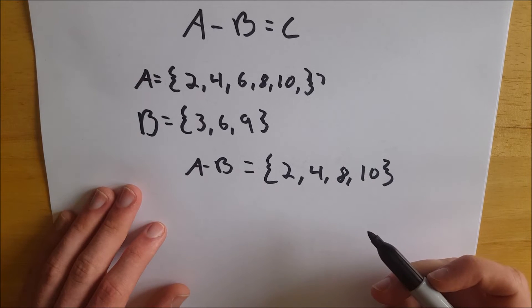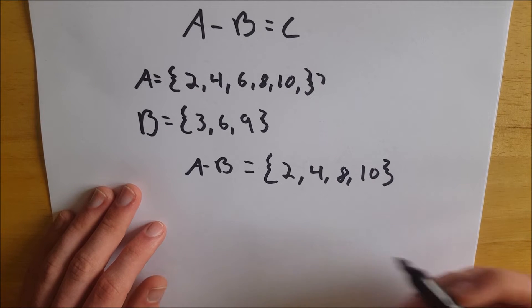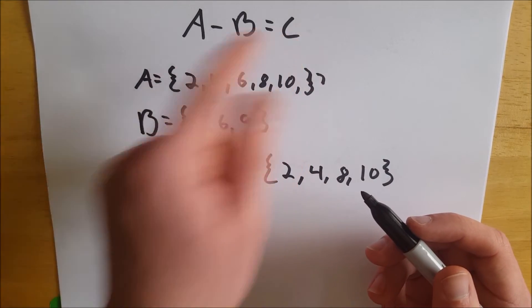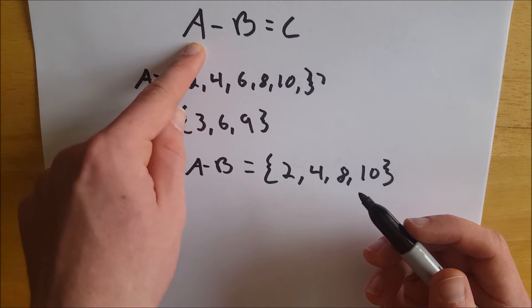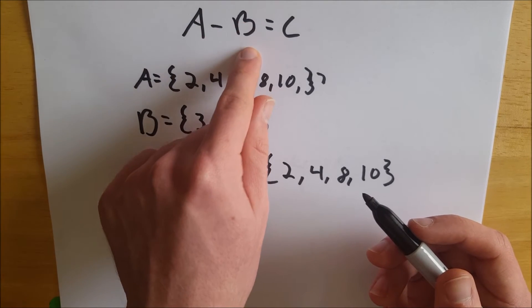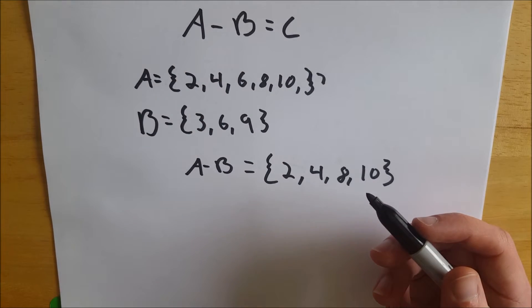So the rule is when you're doing set subtraction, something is an element of C, the result of your subtraction, if it's an element of your first set, the set you're subtracting from, but not an element of your second set, the set you're subtracting.